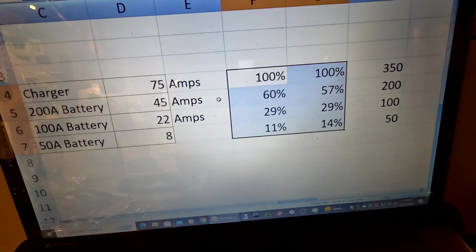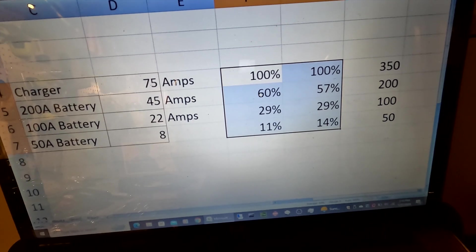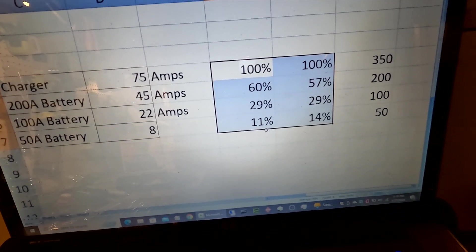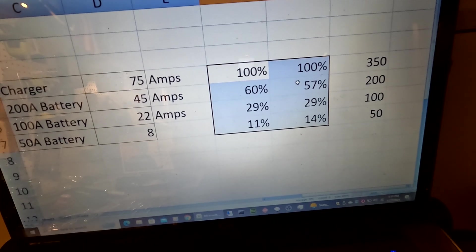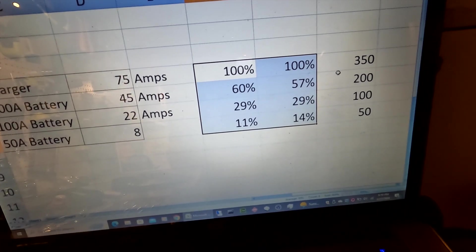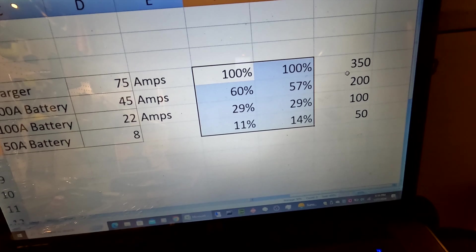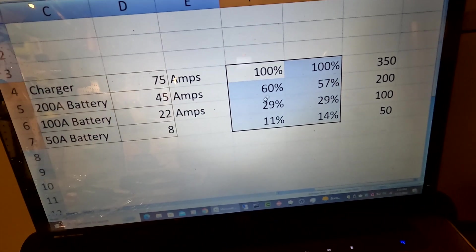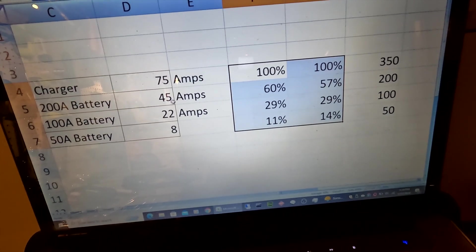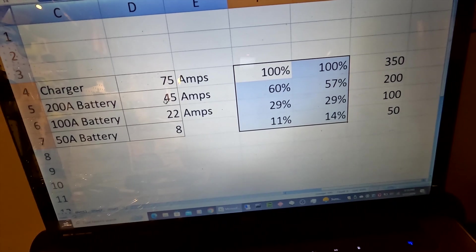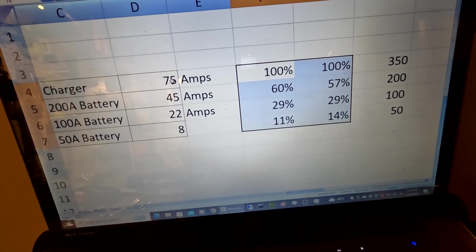I mean, the bigger battery is getting a little bit more and the smaller batteries are getting a little bit less, but you can see that the percentages, the percentage of the battery compared to the full bank is basically the same percentage as what the charge of the battery is receiving compared to the total charge. And I really found that interesting.